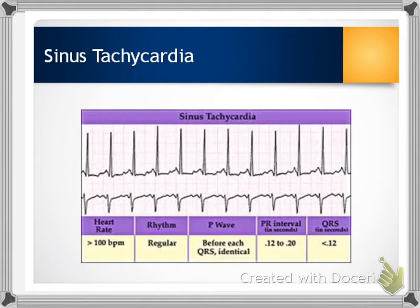Sinus tachycardia: the person has a regular rhythm but a heart rate greater than 100. This might be considered normal while someone is exercising — you would anticipate your heart rate increasing on a treadmill — but other times where it can be a negative side effect include fever, pain, hypotension, hypovolemia, anemia, and hypoxia. It can also be caused by medications such as atropine, epinephrine, and pseudoephedrine.